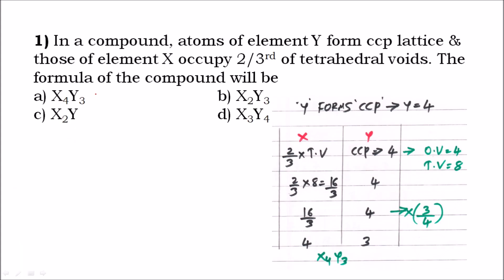The first question: in a compound, atoms of element Y form a CCP lattice and those of element X occupy two-thirds of the tetrahedral voids. The formula of the compound will be — right. So the given compound has two elements X and Y. Y forms CCP lattice, so we get the information that the number of atoms equals four.